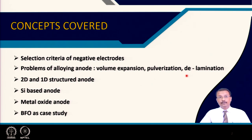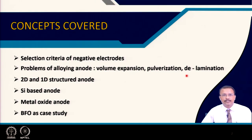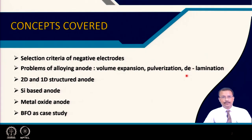Then we will talk about the alloying anode and their actual difficulties, which we will recapitulate. Then how to overcome that in terms of 2D and 1D structural anode. Then silicon-based anode and metal oxide anode will also be introduced. At the end, a case study of bismuth iron oxide, which we talked about in one of my earlier lectures, will also be introduced.